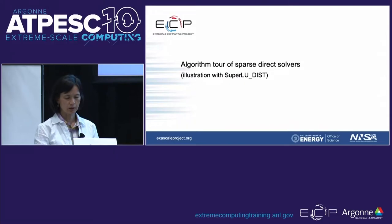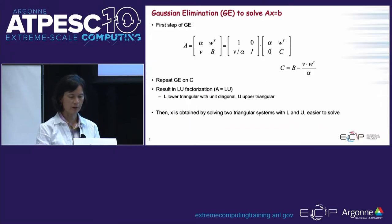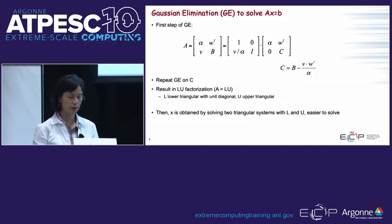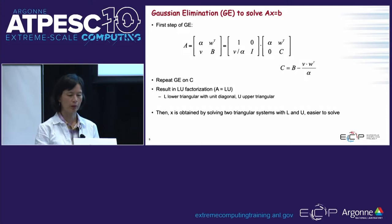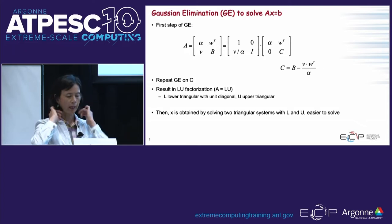The first part will be a very basic sparse direct solver algorithm tour. We'll start with Gaussian elimination, which is the fundamental algorithm in direct solvers. Starting with dense Gaussian elimination: given Ax = b, you decompose matrix A into a lower triangular matrix L and upper triangular matrix U, and then do the triangular solve to get each solution component.